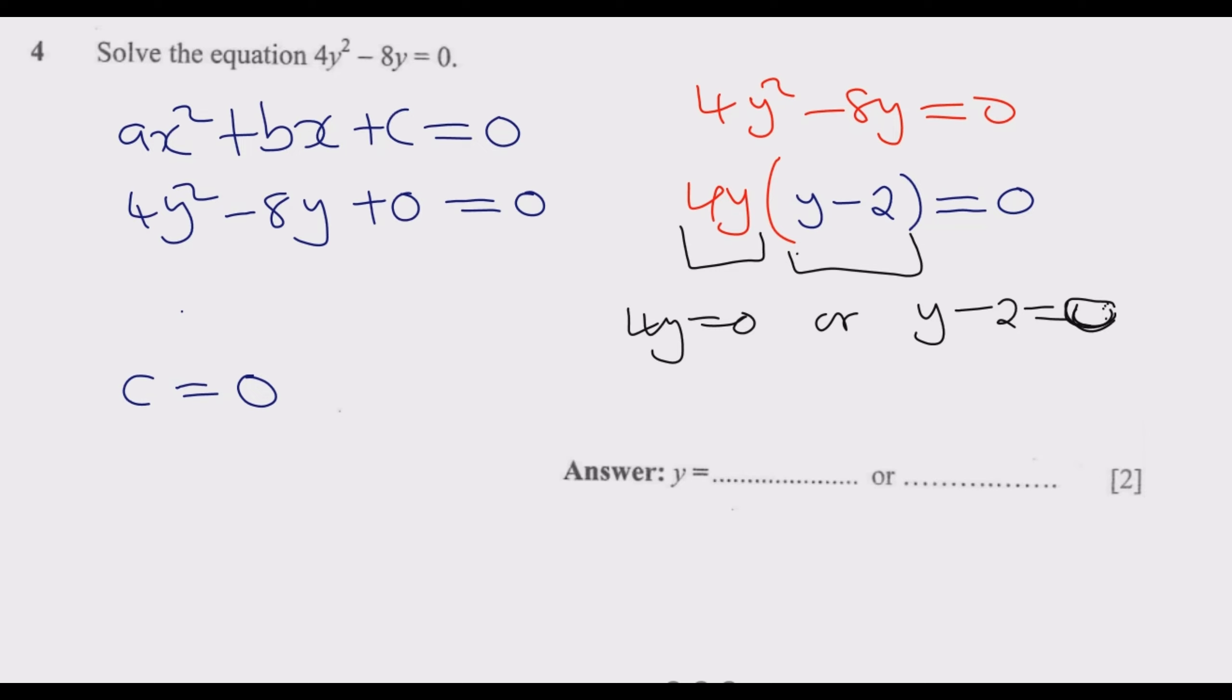So to find y we divide by 4 this side, then we divide by 4 this side. So y is basically equal to 0, or we are basically bringing this to the other side. When these two cross the equal sign it becomes a positive. So y equals basically 2. So it's either y equals 0 or y equals 2. So basically this is how you answer this question to get the full marks.